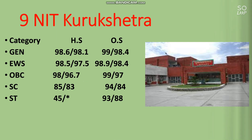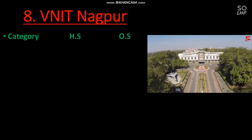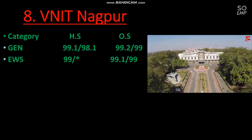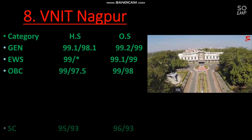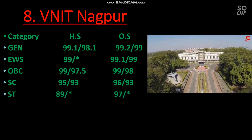The next one is number 8, VNIT Nagpur. The cutoff for the EC branch is: General — 99.2, EWS — 99.1, OBC — 99, SC — 96, and ST — 97 percentile minimum required to get the EC branch.